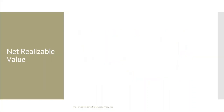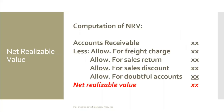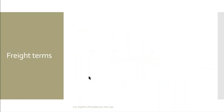To compute the net realizable value, we start with the accounts receivable and then deduct all the allowances: the freight charge, sales return, discount, and doubtful accounts. The most common deduction here is the allowance for doubtful accounts. But if the other three are present, they should also be deducted from your accounts receivable.